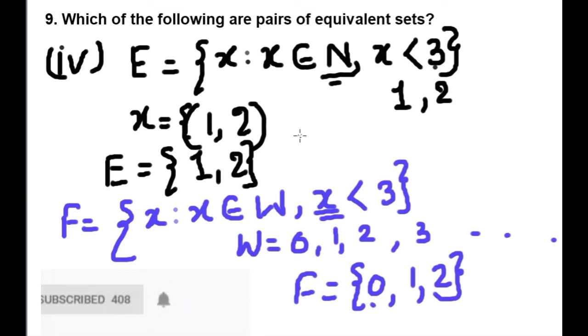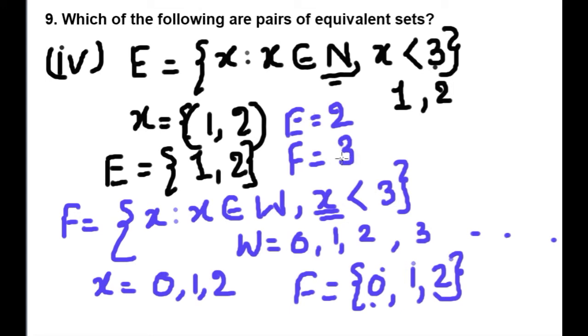So we can say: in E, how many elements? 2. In F, how many elements? 1, 2, 3 - three. So they are not pairs of equivalent sets.